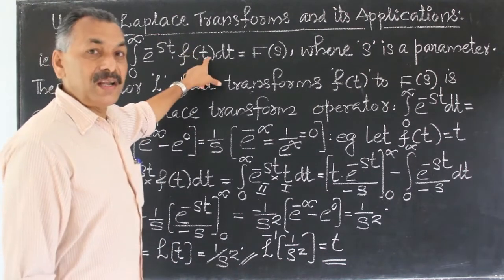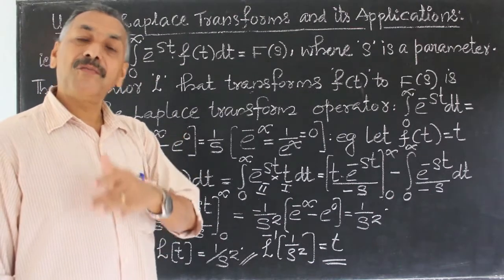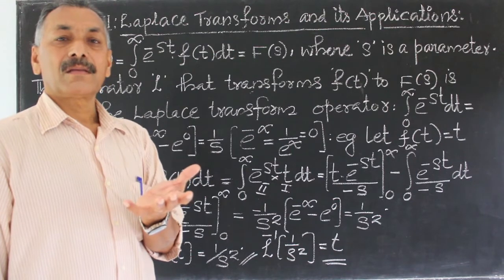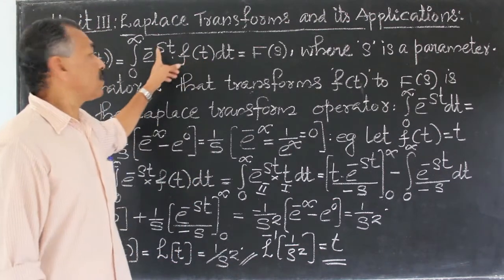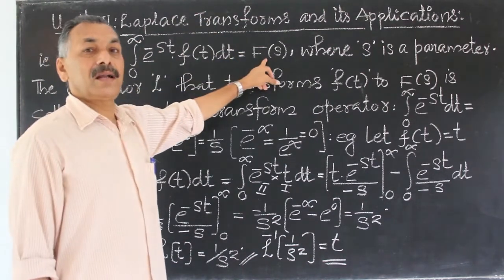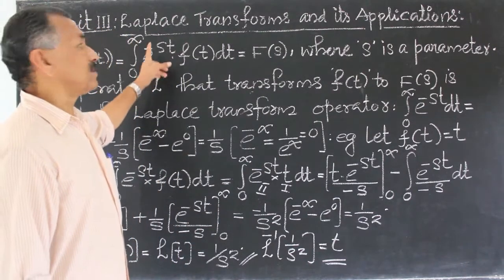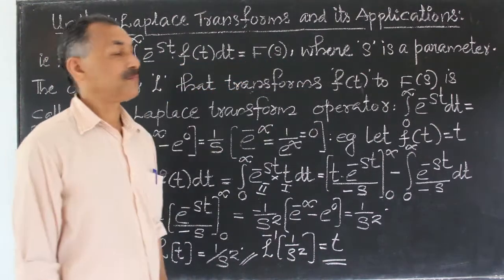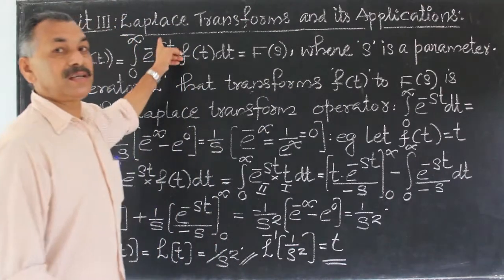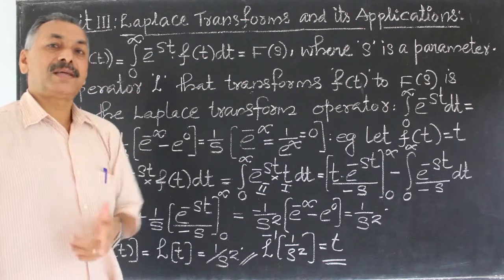L of f of t is equal to the integral from 0 to infinity of e raised to minus st into f of t dt. That is, we multiply f of t by e raised to minus st and integrate — and that integral from 0 to infinity either gives a function of s. S is a parameter, and t is the variable of integration.